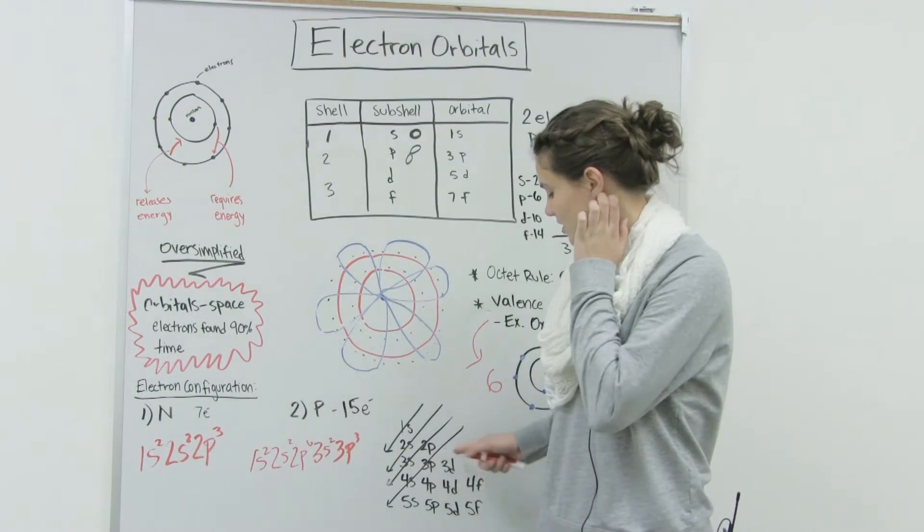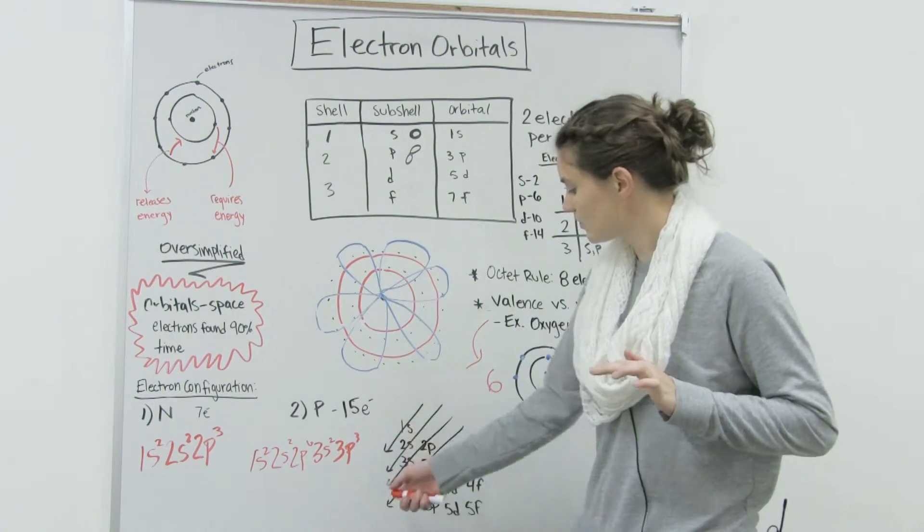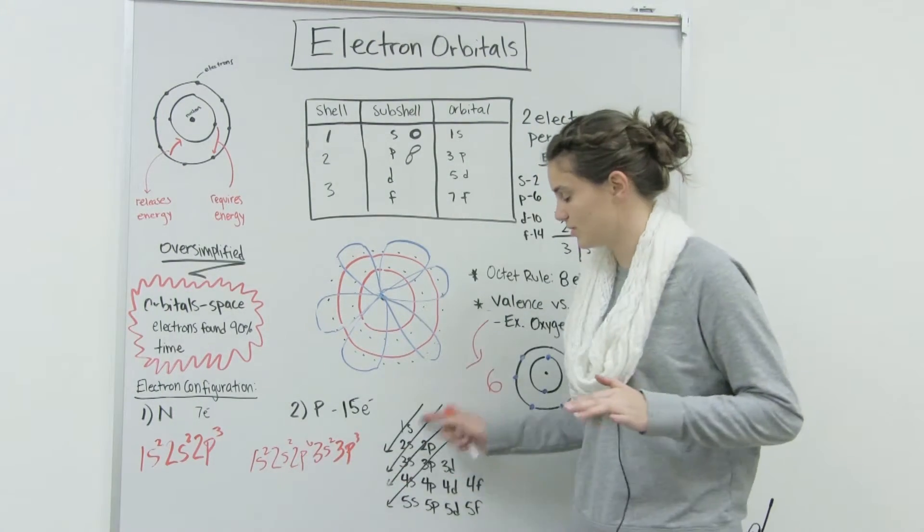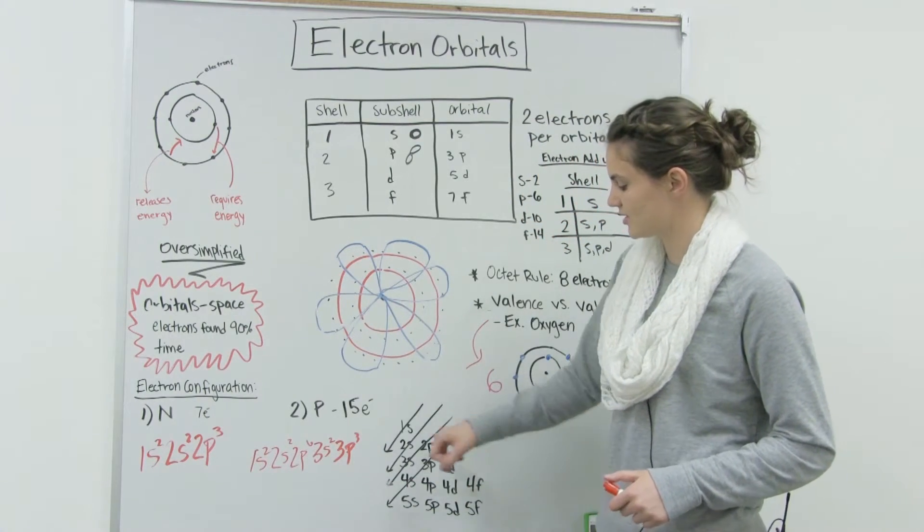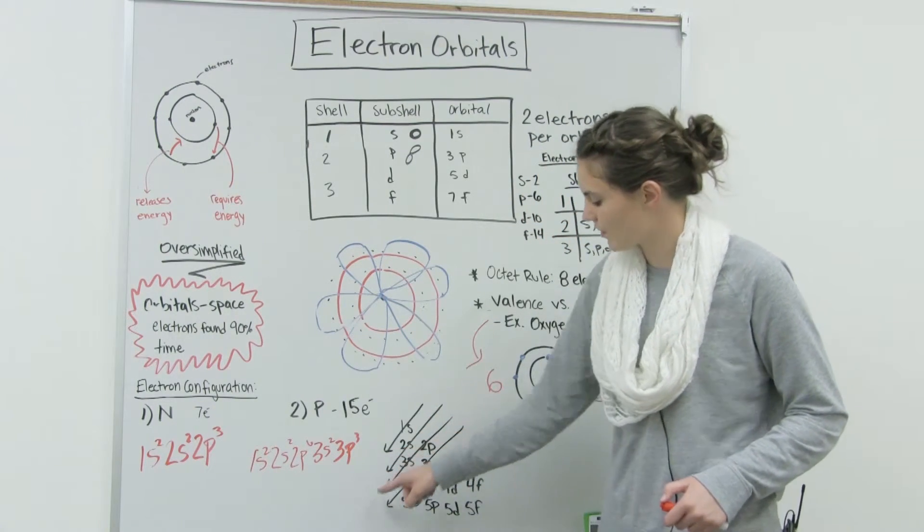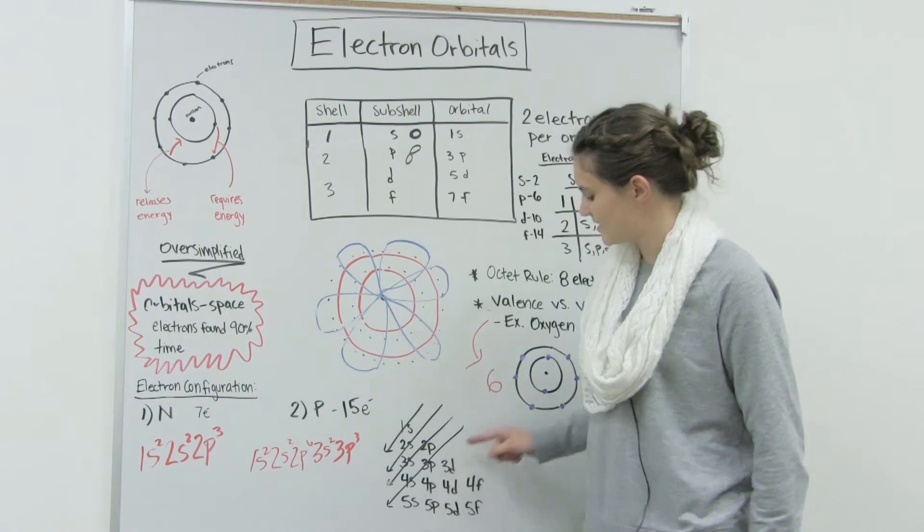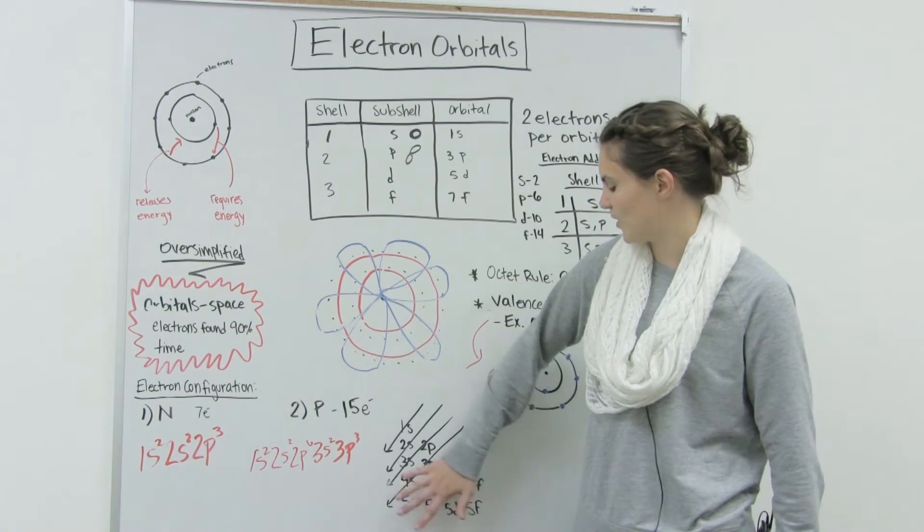So if you ever get confused, here's the way that you fill the shells. This will be the order that you write your electron configurations. You write 1s first, 2s, 2p, 3s, 3p, 4s, and keep going down. For the most part, you won't get this far.